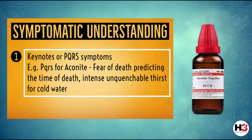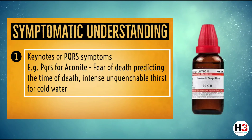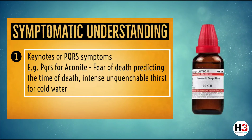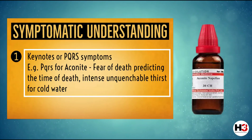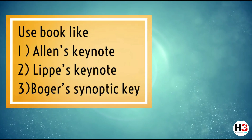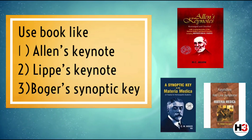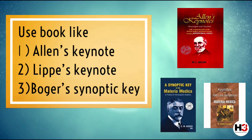The next point is to study the symptomatic understanding of any remedy. The very first step in the symptomatic approach is to understand the PQRS or the most important keynotes of that remedy. For example, the important keynotes for prescribing Aconite can be the fear of death or predicting the time of death on a mental level, and intense unquenchable thirst for cold water on a physical general level. For studying keynotes, we can make use of books like Allen's Keynotes, Lippe's Keynotes, or Redline Symptoms of Materia Medica, or even Boger's Synoptic Key to Materia Medica.